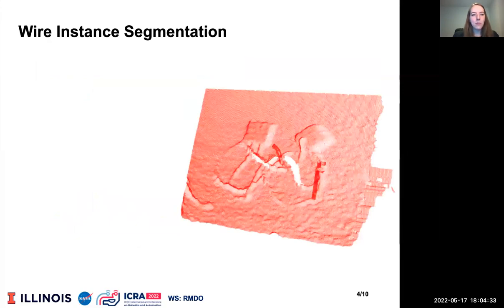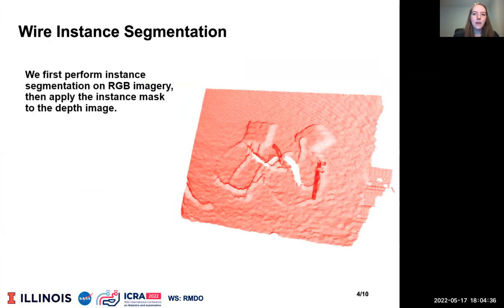Point-wise semantic labeling of point cloud data remains an open challenge in computer vision. We first perform instance segmentation on RGB imagery, then apply the instance mask to the depth image.